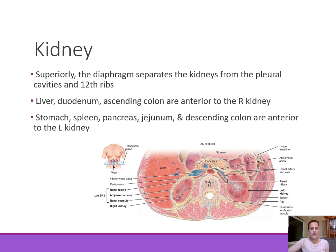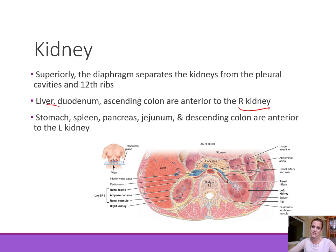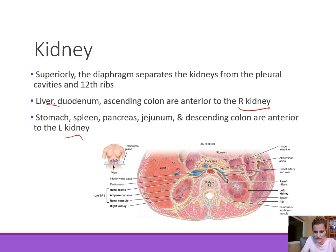Looking at the right kidney, the liver, duodenum, and ascending colon are all anterior to it depending on the level. For the left kidney, the stomach, spleen, pancreas, jejunum, and descending colon can all be anterior. In a transverse plane, on the right side the liver is anterior to the right kidney, and on the left side the kidney is related to the spleen, large intestine, small intestine, and pancreas.